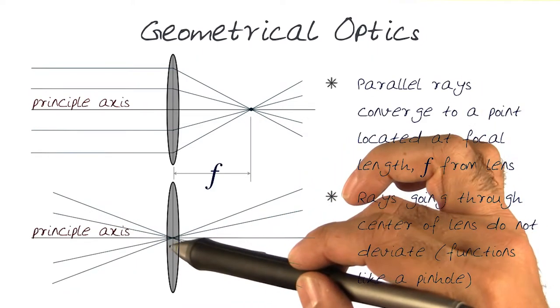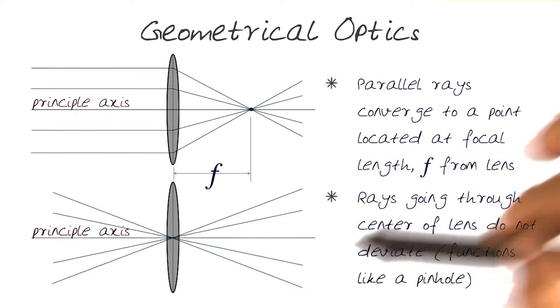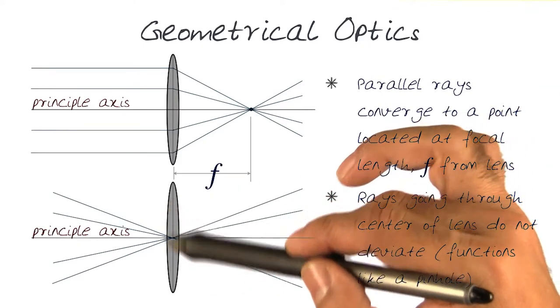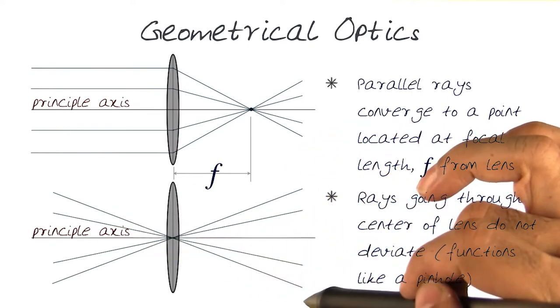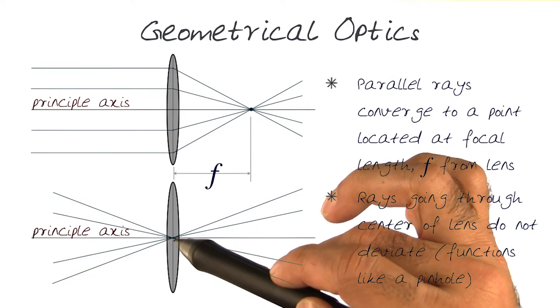Any ray of light that goes through the point of the principal axis will go through straight unchanged; it will not have any deviations. So any rays of light that basically pass through the center, the principal point of a lens, will traverse through without any divergence. In essence, this is the point that behaves like a pinhole.